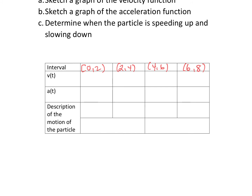Looking at the velocity from zero to two: it's positive in this interval, then negative, negative, and positive. The acceleration is negative in the first two intervals, then positive in the last two. Where the signs are the same and where the signs are different tells us the motion. In zero to two, signs are different — it's slowing down. From two to four, signs are the same — speeding up. Between four and six, signs are different — slowing down. And then six to eight, signs are the same — speeding up.